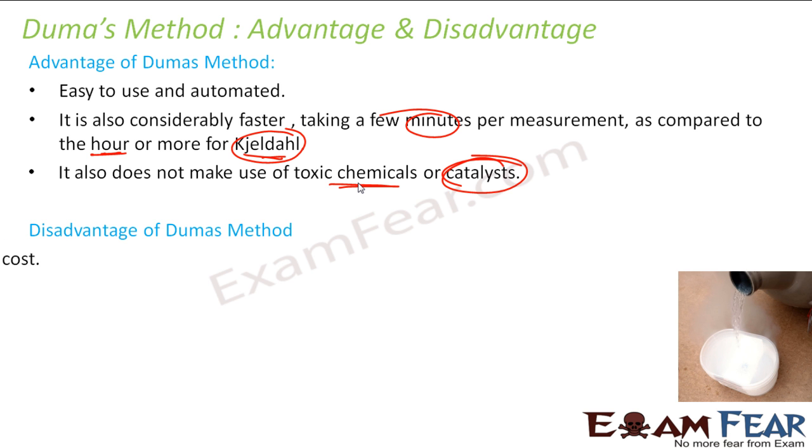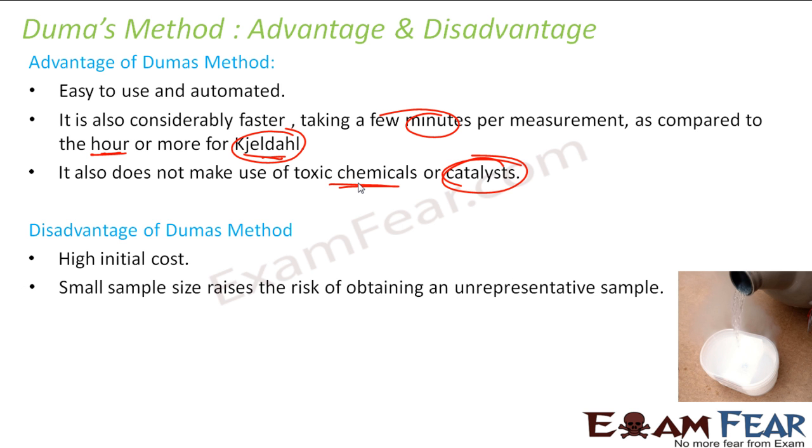But there are some disadvantages of Dumas method too. The initial cost is very high. The whole setup is very costly. And since we take a very small size sample, that means there is a high chance that the small size sample is not a correct sample. The bigger the sample you take, the better is the experiment.